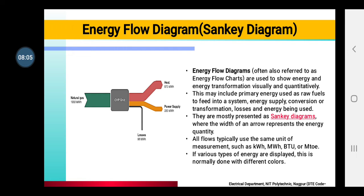The energy flow diagram shows: how much energy you are generating, how much energy you are giving as output, how much energy is going into losses, and how much is going to the load. All of this can be presented in an energy flow diagram. The energy flow diagram is also called a Sankey diagram, which we present through arrows showing where and how much energy is being used in what quantity.